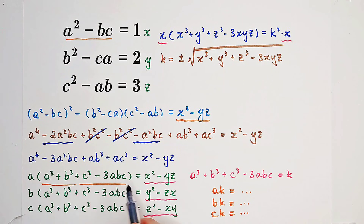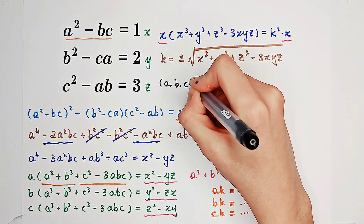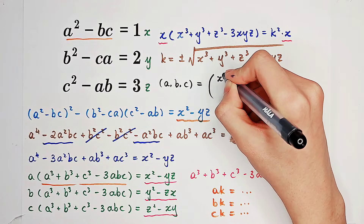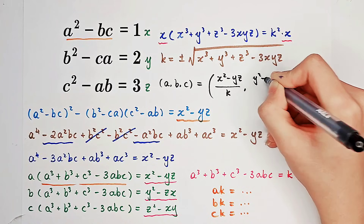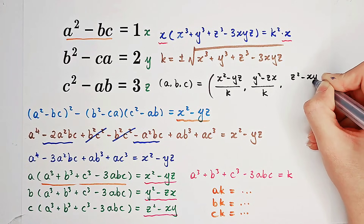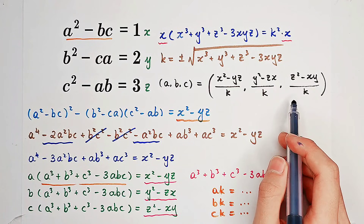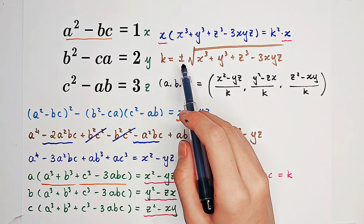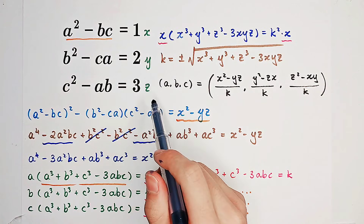Now, what are a, b, and c? a is just (x squared minus yz) over k, b is (y squared minus zx) over k, and c is (z squared minus xy) over k. Notice that there are two pairs of solutions because k has two values — one positive, the other negative. Now substitute x equals 1, y equals 2, z equals 3.